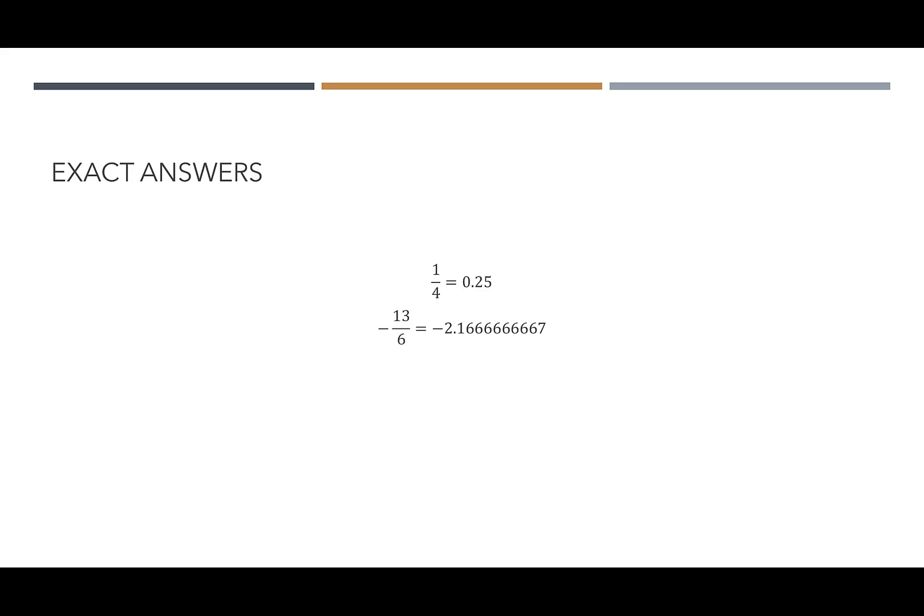But if you have an answer like negative 13 over 6, which as a decimal is negative 2.1666666 forever, then you cannot put in the decimal representation. You would have to put in the fraction, so rounding is not exact. If you get a repeating decimal, enter your answer as a fraction.